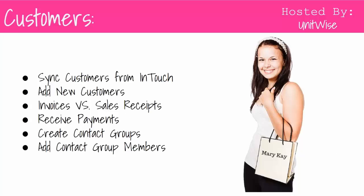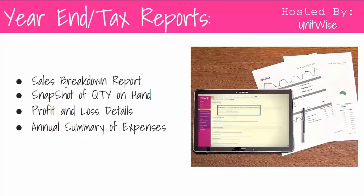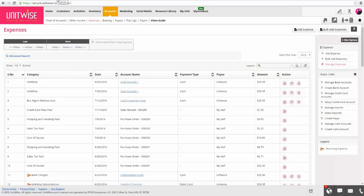The next thing we'll go over is year-end tax reports. There are four main types: Sales Breakdown Report, Snapshot of Quantity on Hand, Profit and Loss Details, and Annual Summary of Expenses. Note that these may not be the only reports you need for filing taxes — always consult with a tax professional or your director to see what other reports you might need.